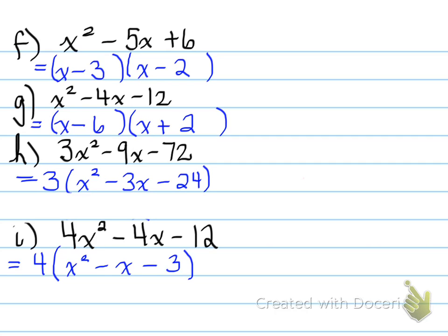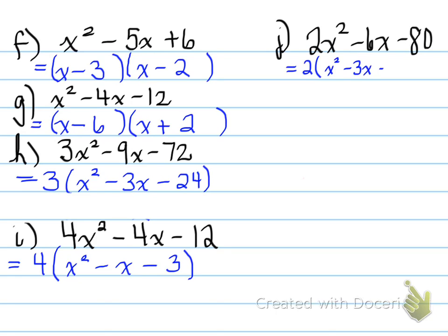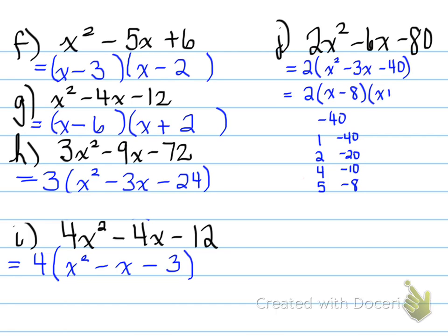There must be an example that works with this situation, and there is. Let's look at 2x squared minus 6x minus 80. Common factor — take out the 2. What two numbers multiply to give us negative 40 and add to give us negative 3? Negative 40 breaks up into the following: 1 and negative 40, 2 and negative 20, 4 and negative 10, 5 and negative 8. The very last one works. So it's going to be 2 bracket x minus 8 bracket x plus 5. Remember, common factor is the very first type of factor you must attempt for all factoring questions. Common factor first at all times.